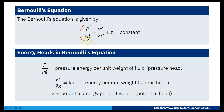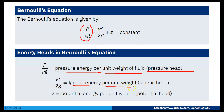In Bernoulli's equation, P/ρg is the pressure energy per unit weight of fluid, also called pressure head. V²/2g is the kinetic energy per unit weight, called kinetic head. And z is the potential energy per unit weight, called potential head.